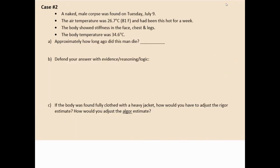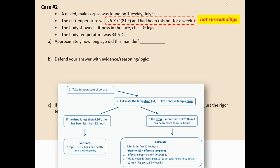Case two: a naked male corpse found in a very hot environment — 81 degrees Fahrenheit, a really hot summer day. The hot surroundings mean you'll make estimates but must adjust them based on the very hot environment. You'll need your flowchart as well as your timeline for rigor mortis, since there is rigor mortis information. Hit pause and try case number two on your own.